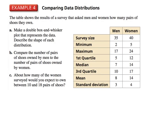Example 4: compare data distributions. The table below shows results of a survey asking men and women how many pairs of shoes they own. Part A: make a double box-and-whisker plot that represents the data and describe the shape of distribution. The problem tells you the first quartile, the median, the third quartile, and other values.